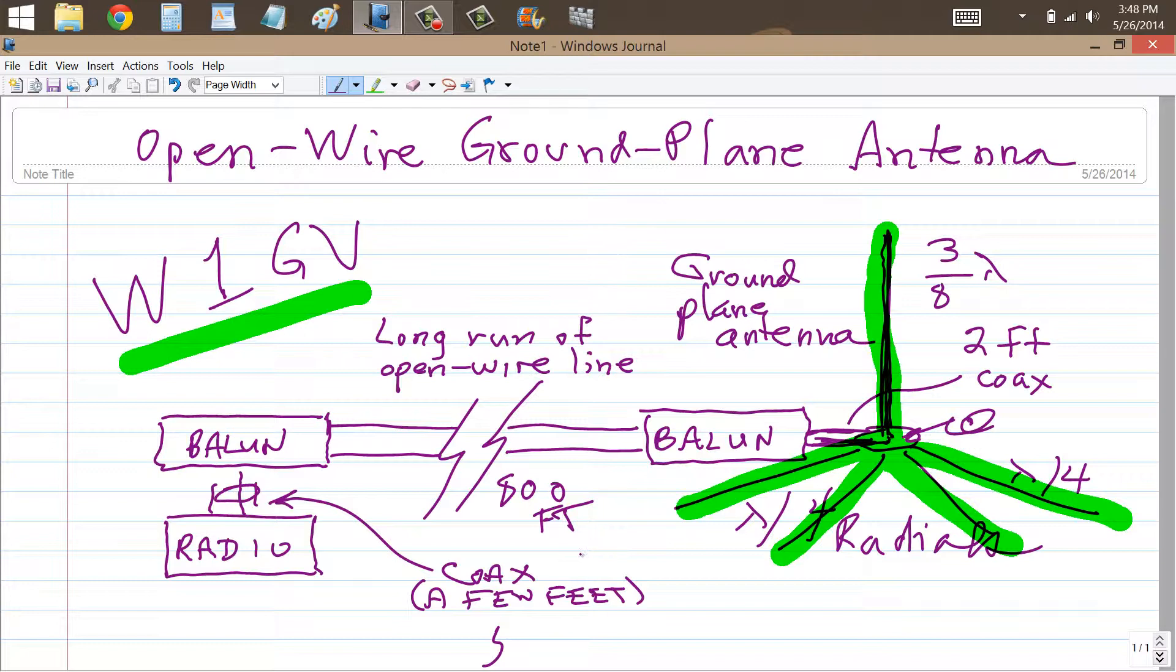Now imagine, just suppose for a moment, that you were to get a nine to one balun. Actually, you get two nine to one baluns. Then you hook them up, one to nine impedance transfer ratio at the radio, nine to one impedance transfer ratio at the antenna. You're beginning to get the idea here.